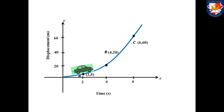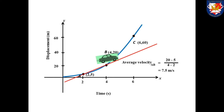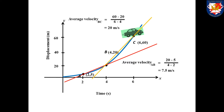Let's have another example, which is not a line. We have three points on the curve: A at (2, 5), B at (4, 20), and C at (6, 60). The average velocity from A to B is the gradient between A and B. By calculation, the average velocity of AB is 7.5 metres per second. From B to C, the average velocity is 20 metres per second. So in this graph, we have a different rate of change.